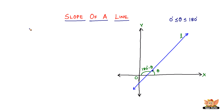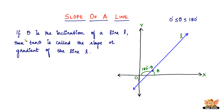Now let us define what is the slope of a line. If theta is the inclination of a line L, then tan theta is called the slope or gradient of the line L. The reason we did all the startup is for you to understand what exactly theta is — it's the angle measured anticlockwise from the positive direction of the X-axis. So if theta is the inclination of any line L, then tan theta is the slope of that line.